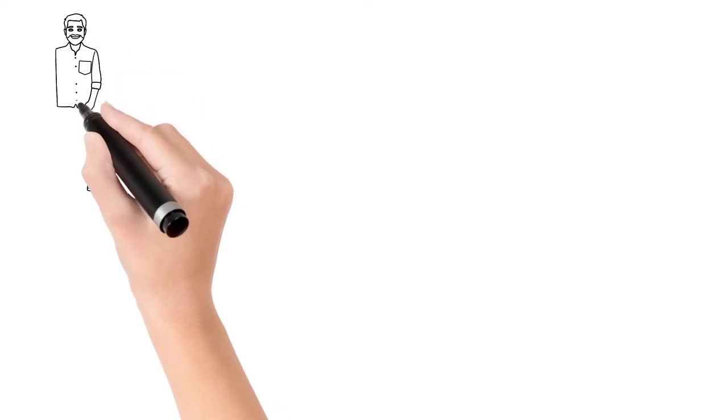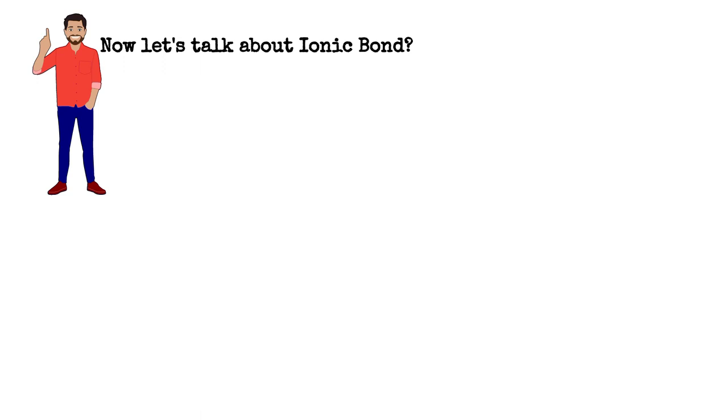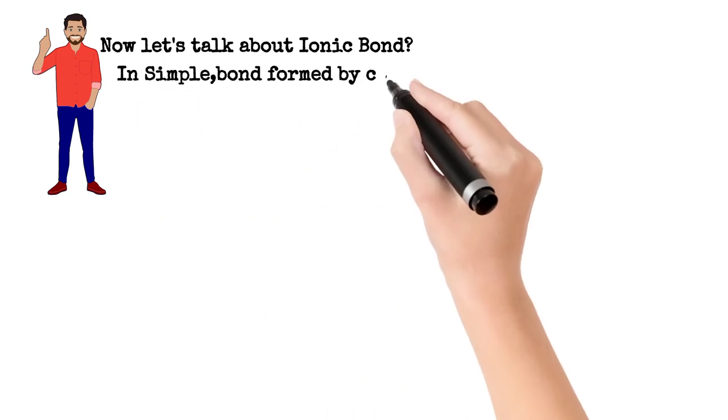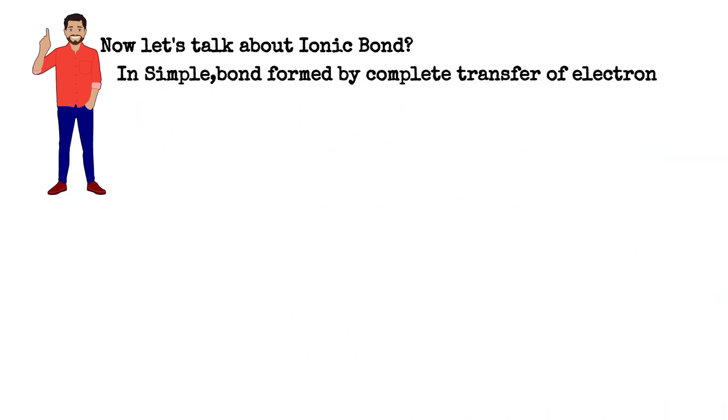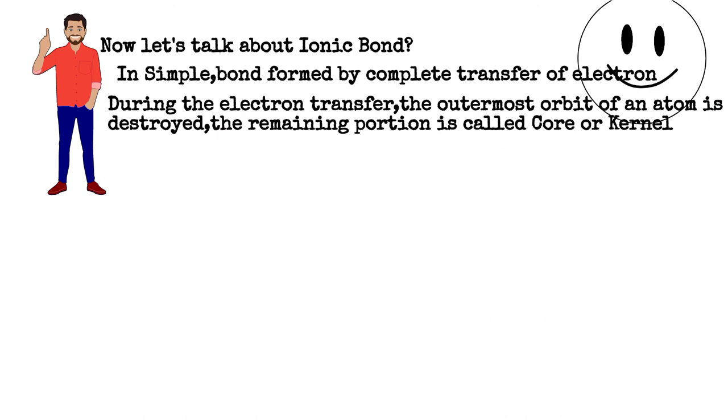Now let's talk about ionic bonds. What is an ionic bond? In simple terms, a bond which is formed by the complete transfer of electrons from one atom to another atom in an ionic case.